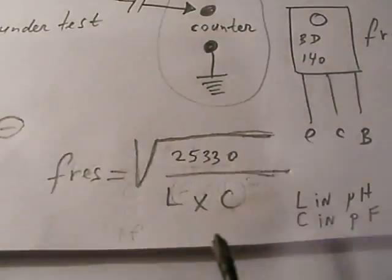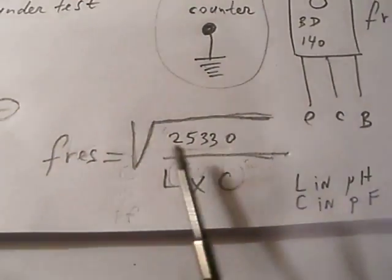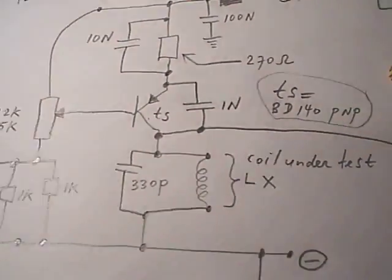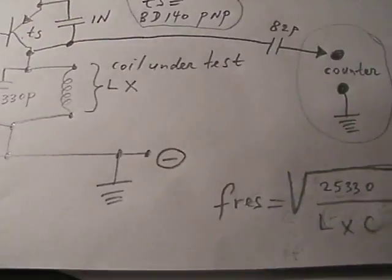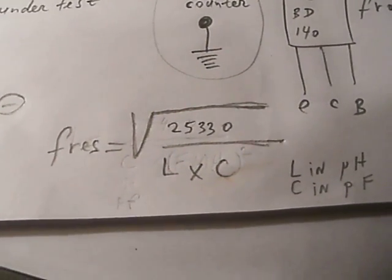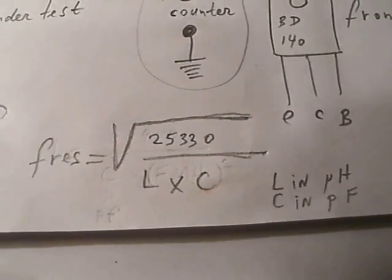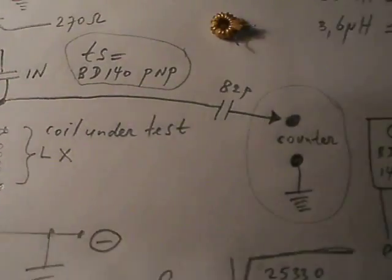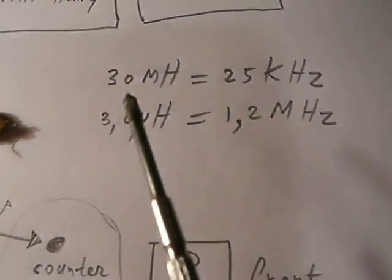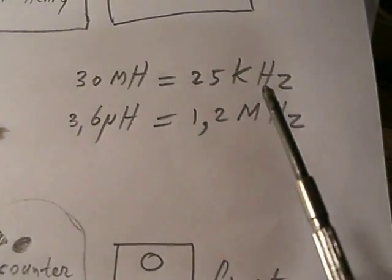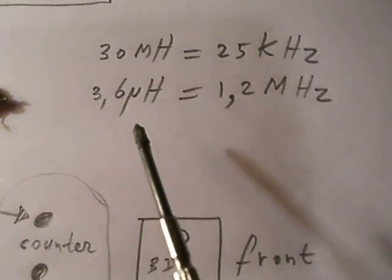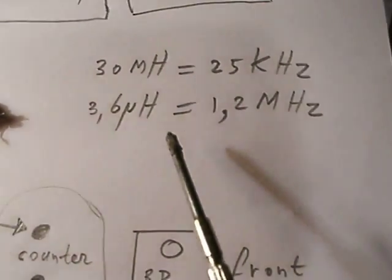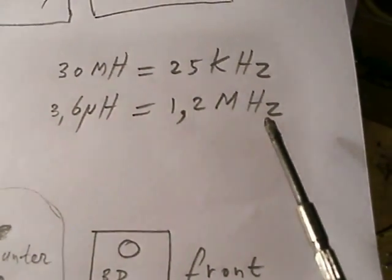You can derive all the values from this formula. I don't say that this oscillator has a linear characteristic, so perhaps it doesn't match perfectly with this formula. But it matches in a certain sense that with 30 µH we have 25 kHz and 3.6 µH, the oscillator oscillates on 1.2 MHz.